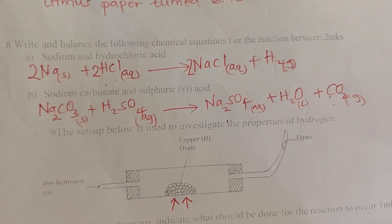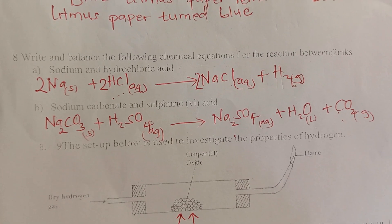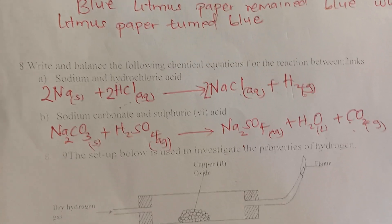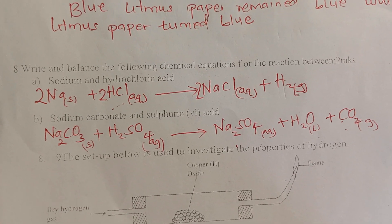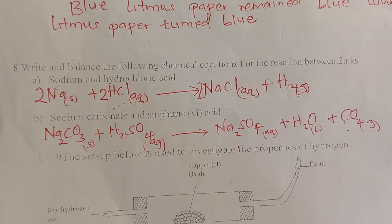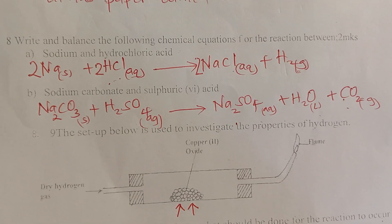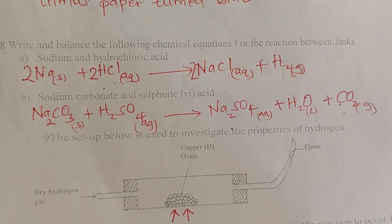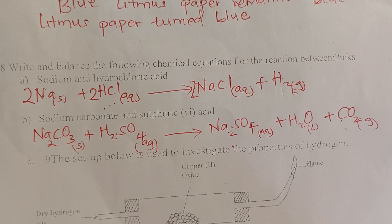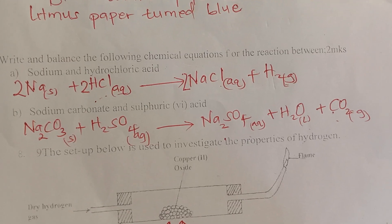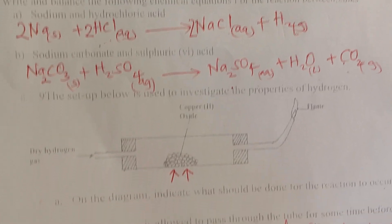Write balanced equations for the following reactions. Sodium and hydrochloric acid gives sodium chloride plus hydrogen gas. Sodium carbonate plus sulfuric acid gives sodium sulfate, water, and carbon dioxide.